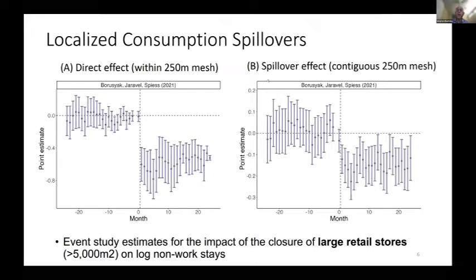The punchline from these event studies: immediately after a large retail store closure, we observe a highly statistically significant, substantial drop in foot traffic in the 250-meter grid square containing the closure. Closures are not random, but reassuringly, pre-trends are pretty flat before the store closes, and we see a distinct drop in foot traffic. Our model of trip chains predicts that not just the area of the closure but also nearby locations along the way will see a fall in foot traffic — and indeed we observe a statistically significant drop in foot traffic in neighboring areas, consistent with the consumption externalities our model emphasizes.